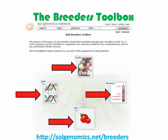The Breeders Toolbox provides direct links to breeder-relevant tools and tutorials. There are currently four tools in the Breeders Toolbox: a trait search, a marker search, a QTL analysis tool, and a SNP tool. In addition, if we scroll down the page, we can find SGN-related tutorials that have been developed specifically for breeders.